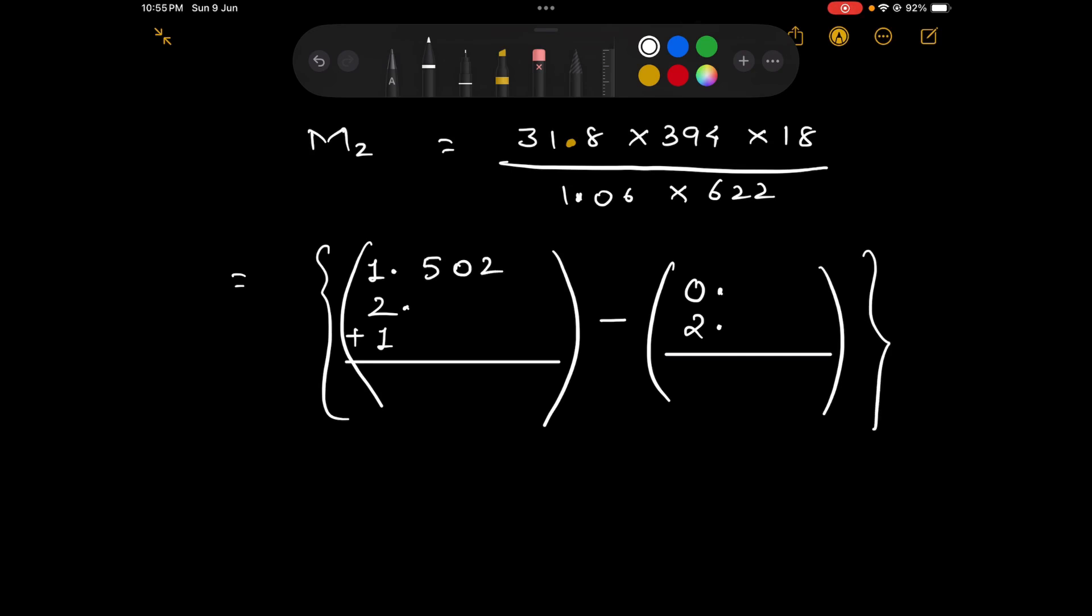So let us add: 31.8, the log is 5024. 394 is 5955. 18 log is 2553. Then 1.06, the log is 0253. And 622, the log is 7938.